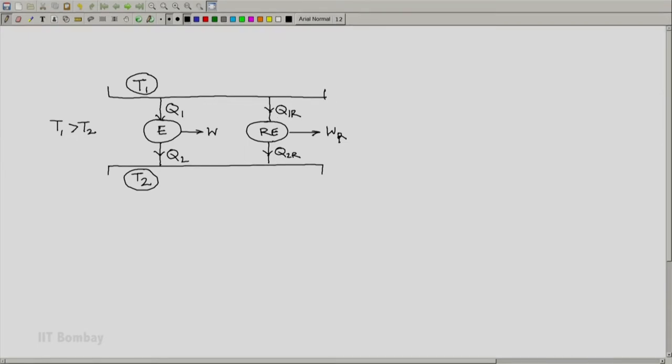Whereas if I run it in reverse, that is as a refrigerator, Q2R will be absorbed from the low temperature reservoir, Q1R will be rejected to the high temperature reservoir, and WR the work will be absorbed. The three arrows will get reversed or inverted in their direction. That is something which we can do and we will do to demonstrate the proof of Carnot theorem.